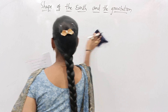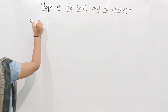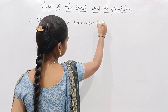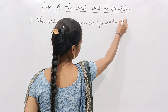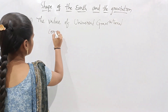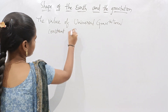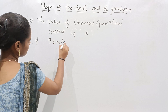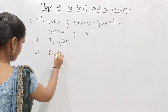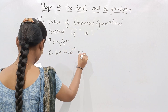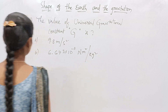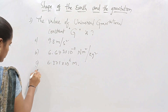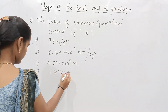The third question is: the value of universal gravitational constant G is — Option A: 9.8 meters per second squared; Option B: 6.673 × 10⁻¹¹ newton meter squared per kilogram squared; Option C: 6.371 × 10⁶ meters; Option D: 1.738 × 10⁶ meters.